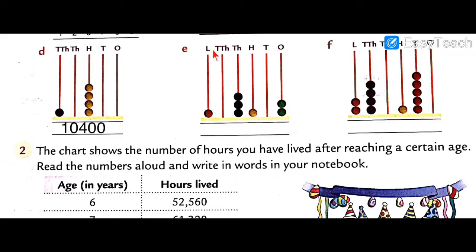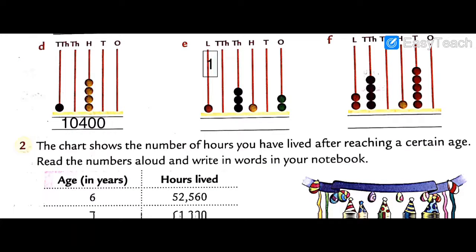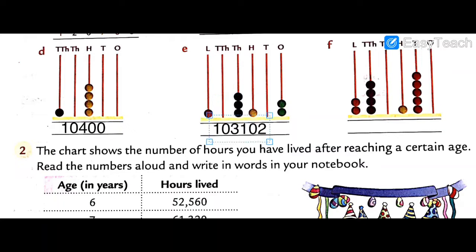Question E. In the lakhs place again — lakh is one lakh. Ten thousand place is zero. Thousand place has three. Hundred has one. Tens is zero. Ones is two. So the answer is one lakh, three thousand, one hundred, and two.